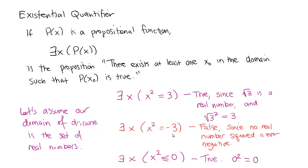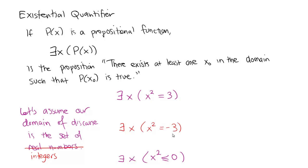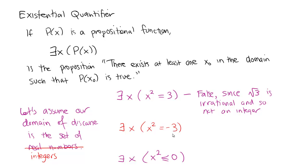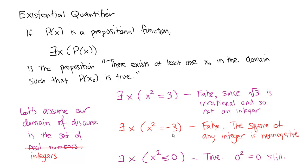What happens if we change the domain from real numbers to integers? The first statement — ∃x such that x² = 3 — becomes false, because √3 and −√3 are irrational, and no integer squares to 3. The second statement remains false. The third statement is still true because 0² = 0. So changing the domain of discourse can actually change the truth value of an existential proposition.